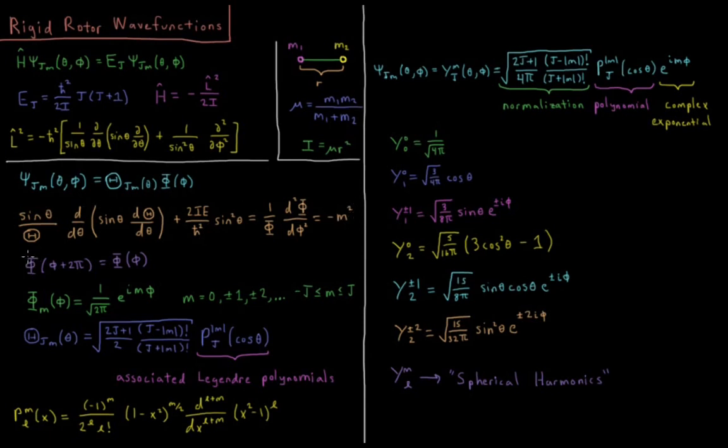So our capital phi, our function of phi, based off the properties of the variable phi in spherical polar coordinates, we know that it's periodic every two pi radians. Every 360 degrees, you've rotated all the way around the z-axis and you've come back around again. So phi of phi plus 2 pi equals phi of phi. So phi, just depending on the quantum number m, phi m of phi equals 1 over square root of 2 pi e to the i m phi.